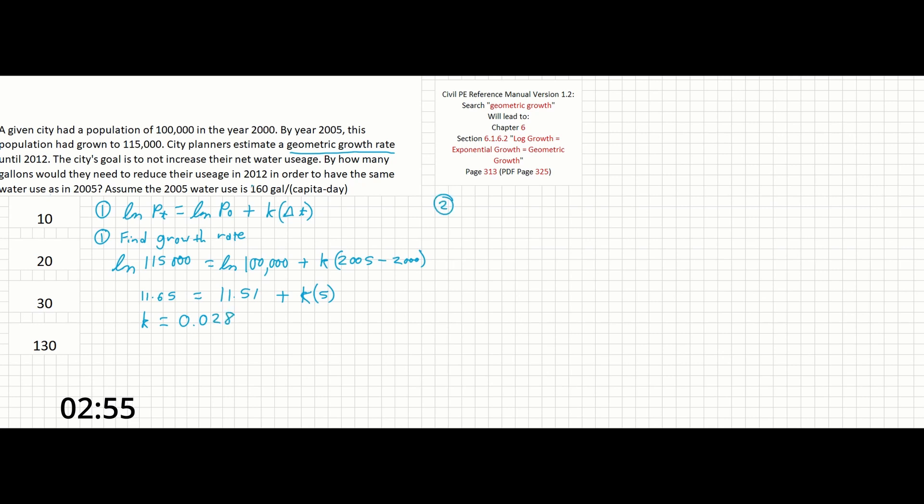Now let's go to step 2. So we found what the growth rate is, which means we can find our population in 2012. So again, we can use our same exponential growth equation. So we can write this out again as ln p sub t equals ln p sub 0 plus k times delta t. But in this case, ln of p sub t is going to be our unknown since that's what we're calculating for.